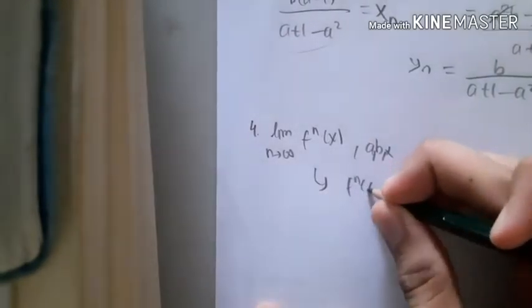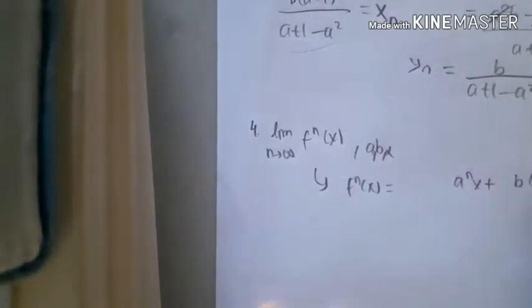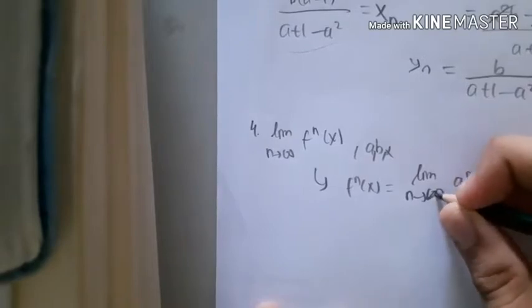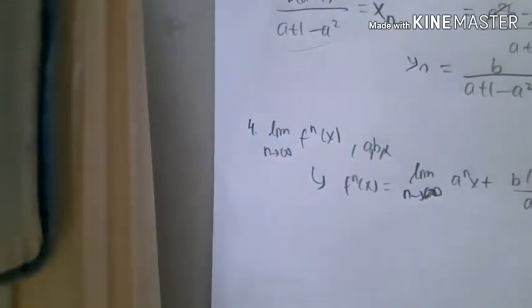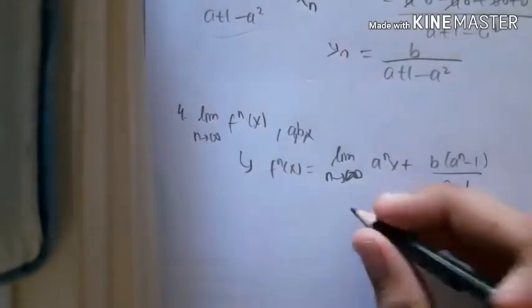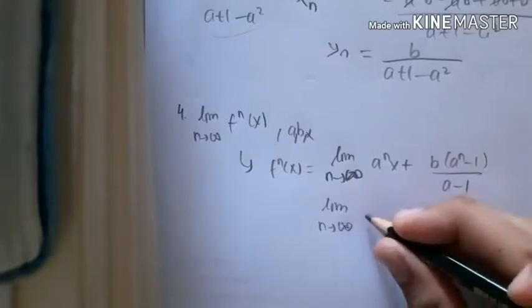That is f^n(x) = a^(nx) + b(a^n - 1)/(a - 1). The limit of n approaching infinity - now how to find this limit? Technically we can predict how this graph works. You see that this is a plus sign, and you know that the property of limits, we can actually separate this.